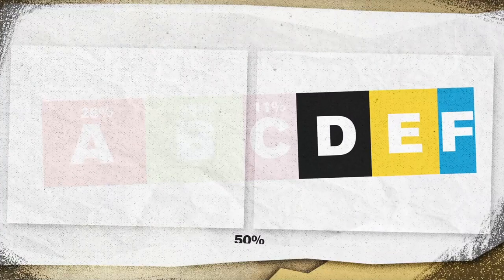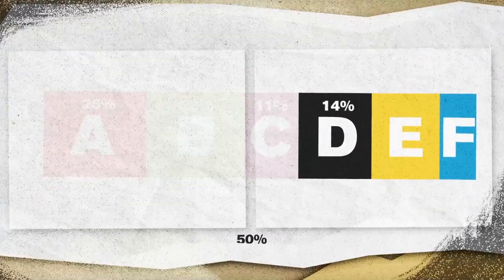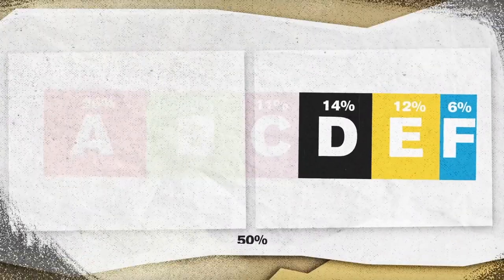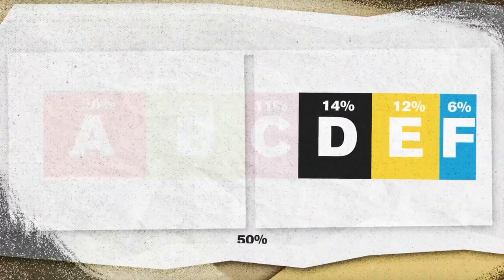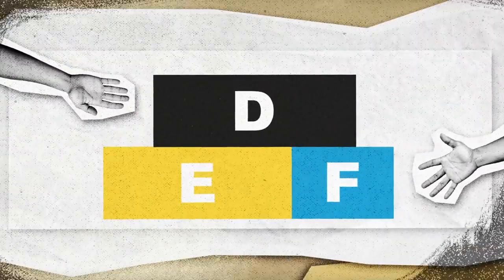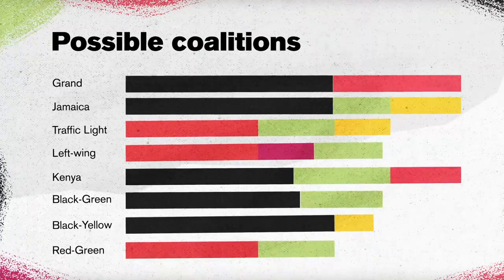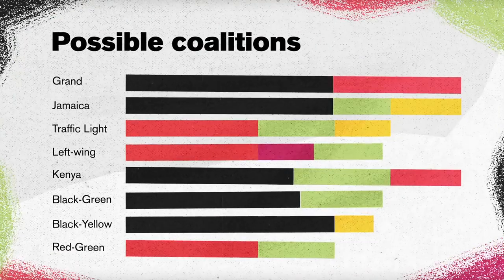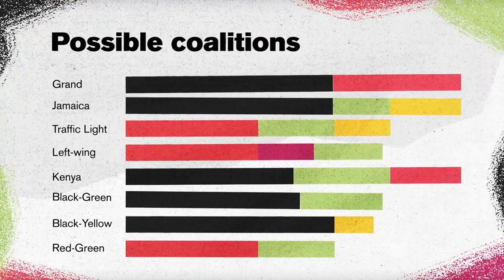If parties D, E, and F receive 14%, 12%, and 6% of the vote respectively, then party D becomes the so-called leader of the opposition. There are many options for coalitions, and we've seen a wide range of them at the national and state levels over the past 75 years.